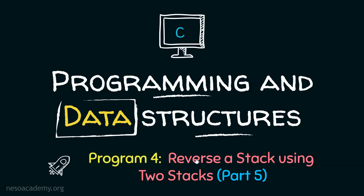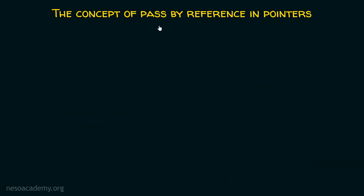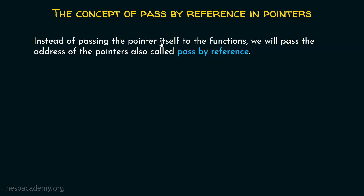Hello everyone, welcome to this C Programming and Data Structures lecture. This is part 5 of reversing a stack using two temporary stacks. In this presentation, we will try to understand the concept of pass by reference in terms of pointers. Instead of passing the pointer itself to the functions, we will pass the address of the pointers, also called pass by reference.